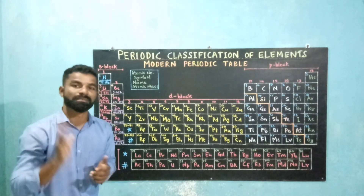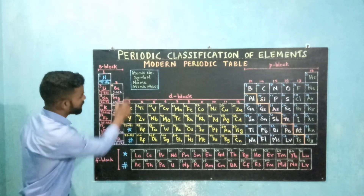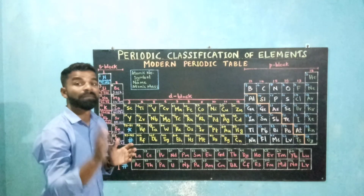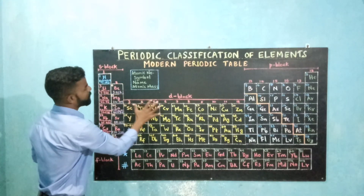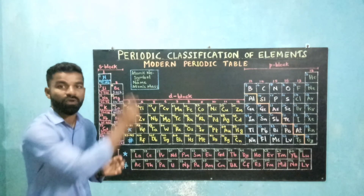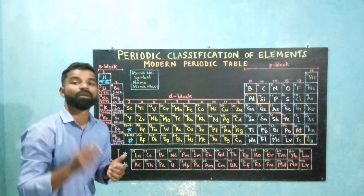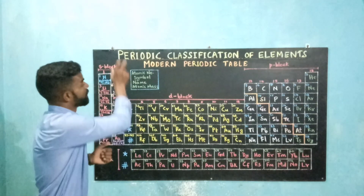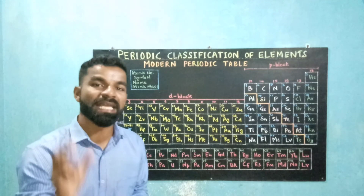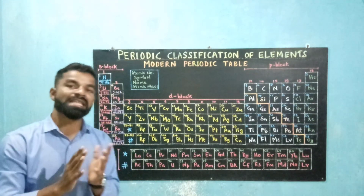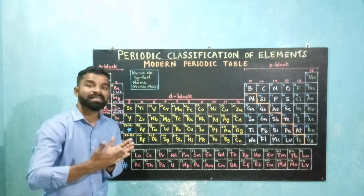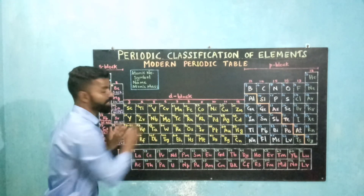The modern periodic table contains 18 vertical columns which are called as groups, numbered from one to 18. This arrangement of seven periods and 18 vertical columns results in the formation of boxes. Each box corresponds to a place for one single element. These elements are arranged in increasing order of their atomic numbers.